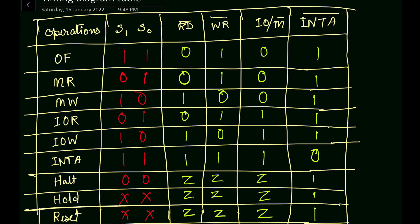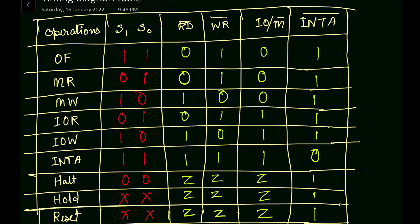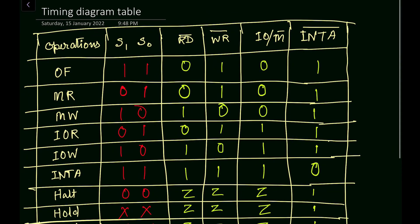This is all about the timing diagram helper table. This table is most important for drawing the timing diagram. The X values represent the don't care condition where the operation does not depend on those inputs, and Z represents the high impedance state meaning those signals are not controlling the microprocessor operation. Thank you for watching — if you have any questions please put them in the comment section below, and like, share, and subscribe to the channel.